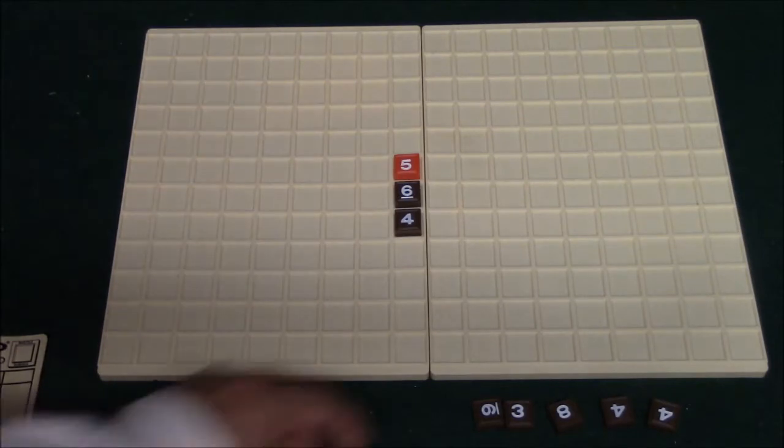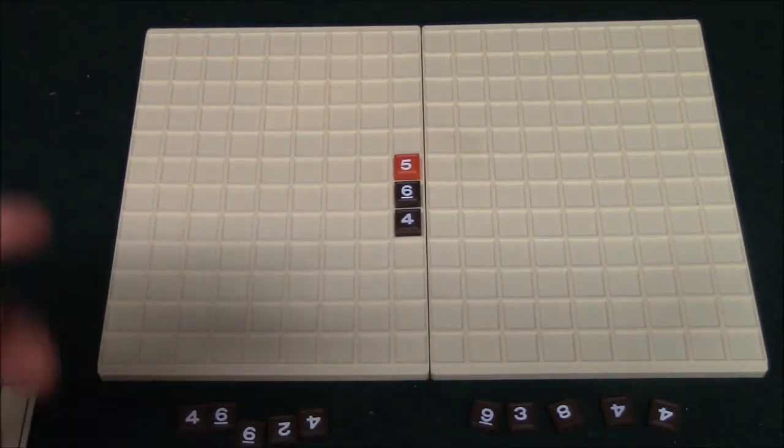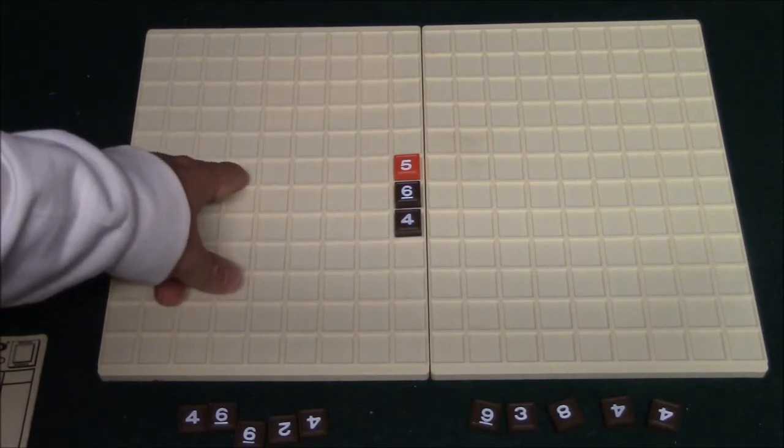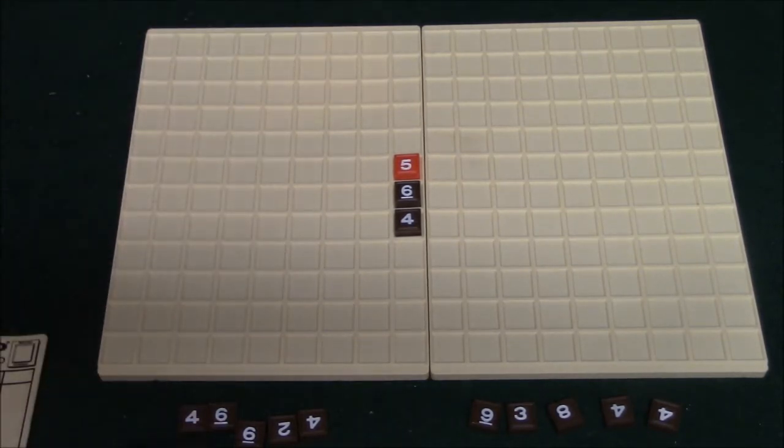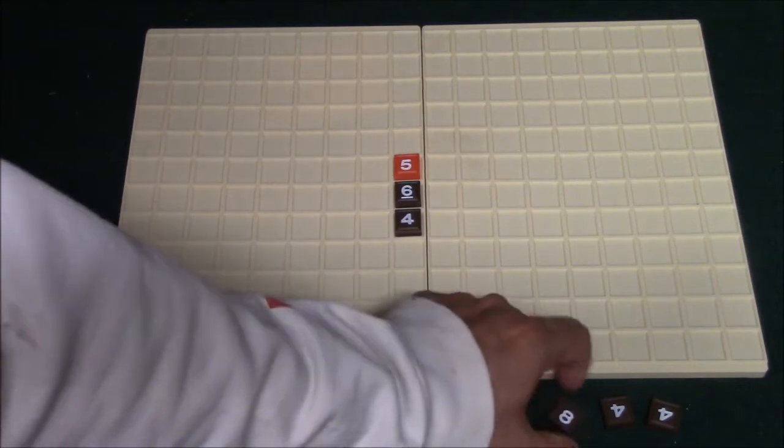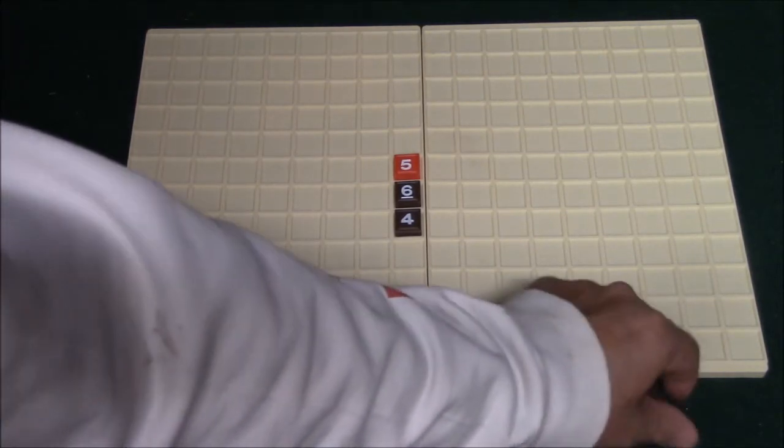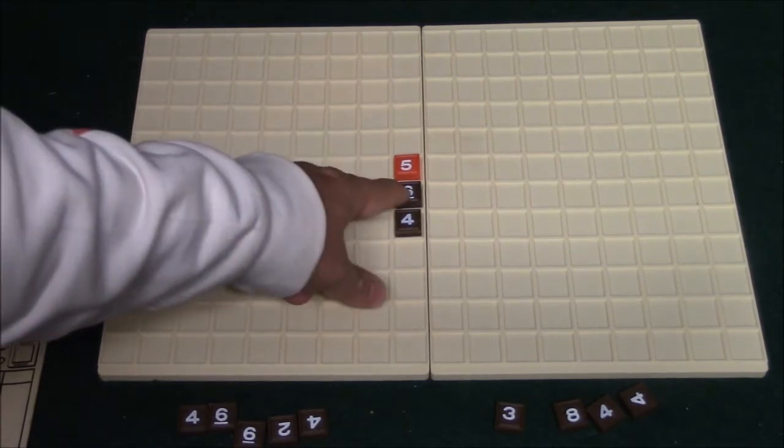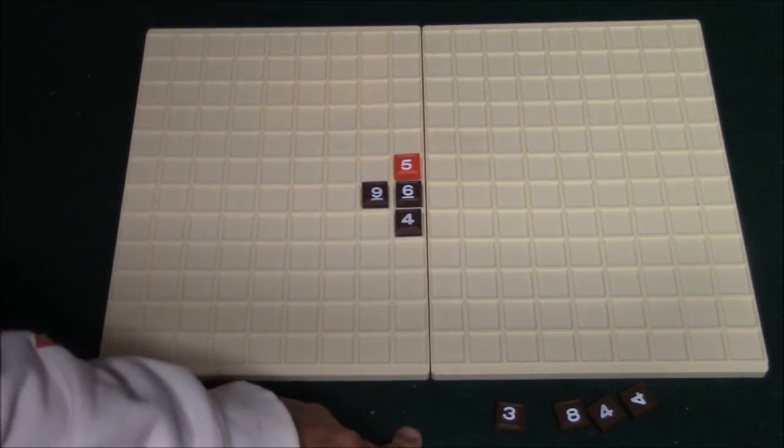So player two is going to look at his tiles, and one thing to note is the maximum length of the line that you can make is five tiles. You can't go past five. So let's just say player two decides to go, and he sees what he's got here. So player two decides he's going to place one here. This is going to be 15 points.